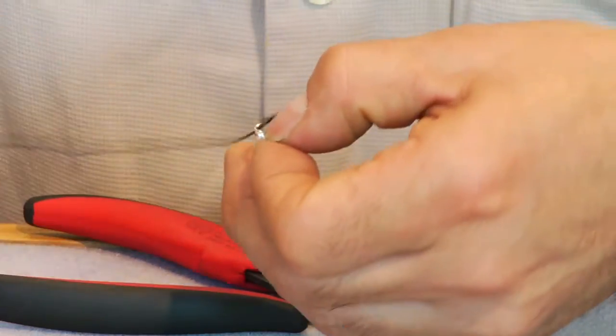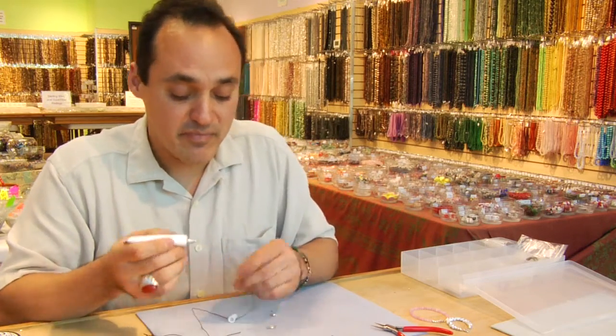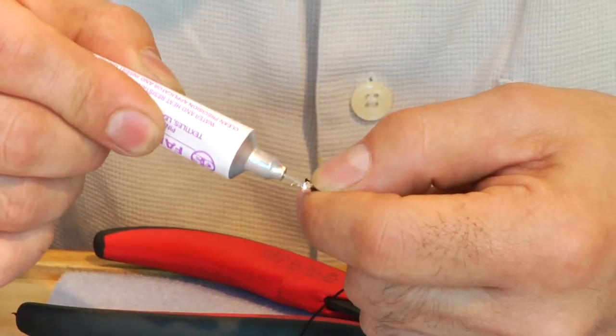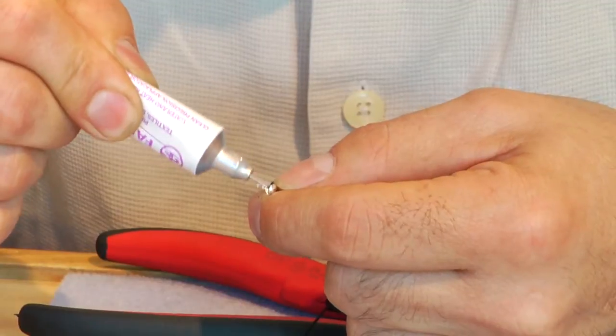What I like to do is add a little bit of GS fabric cement. Place it on the end just to keep the fabric from fraying.